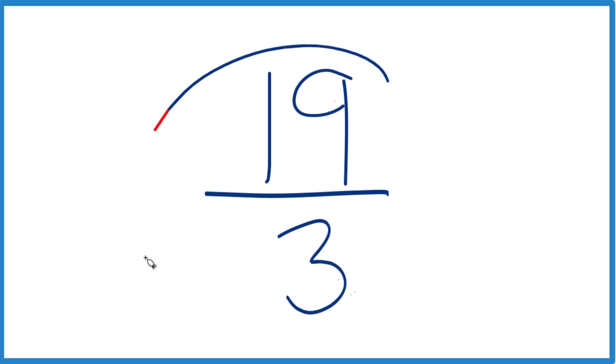Let's simplify the fraction 19 thirds, and we'll also write it as a mixed number.